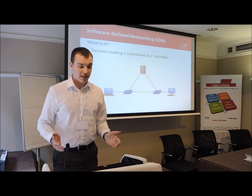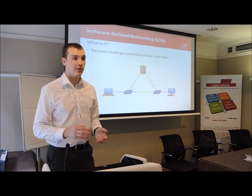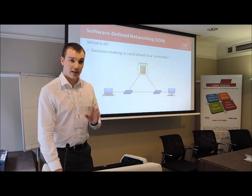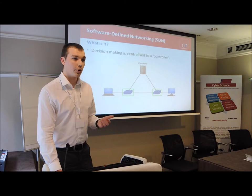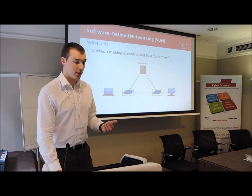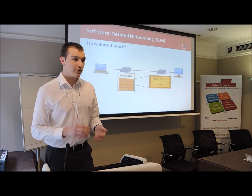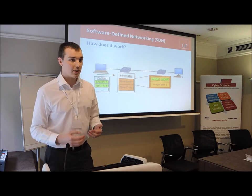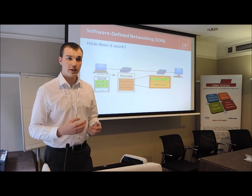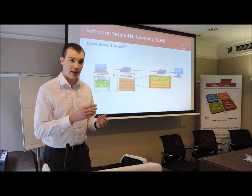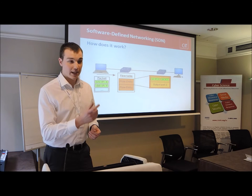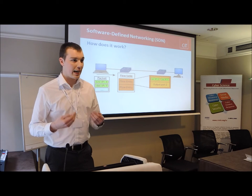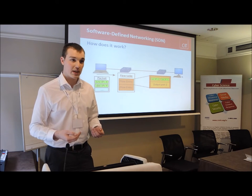In SDN, control is centralized to a device known as a controller. It's the controller's job to make forwarding decisions for traffic in the network. The forwarding devices in the network will forward traffic based on how the controller instructs them. Each forwarding device contains flow tables, and these flow tables contain flow entries. When a packet arrives at a forwarding device, the forwarding device will look at details in that packet and attempt to match it with matching criteria in a flow entry.